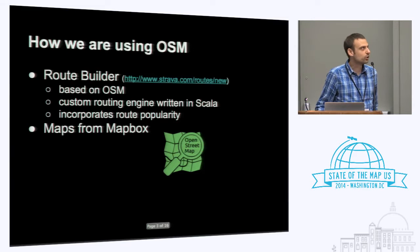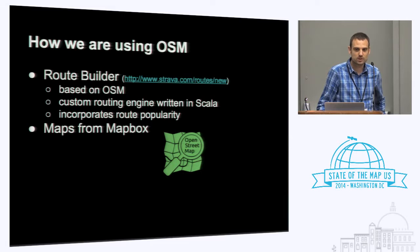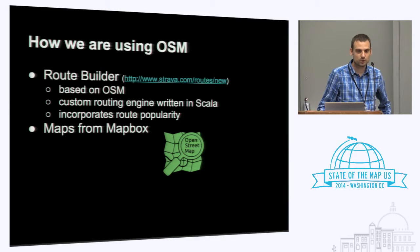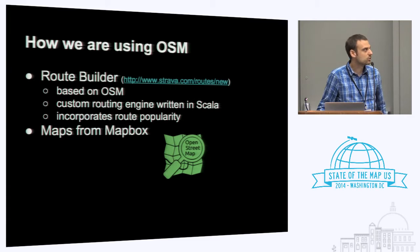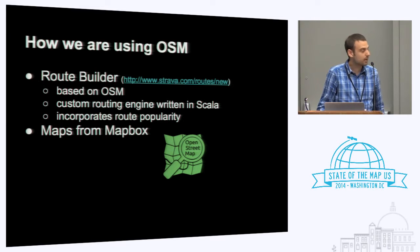One way we're using that data right now is for a route builder. It's based on OSM, and in our routing algorithm we use route popularity to give you a better route that follows popular routes versus just the shortest route. We're also using OSM via Mapbox for our mobile apps — in our feed we use the map. That's how we're using OSM map data.